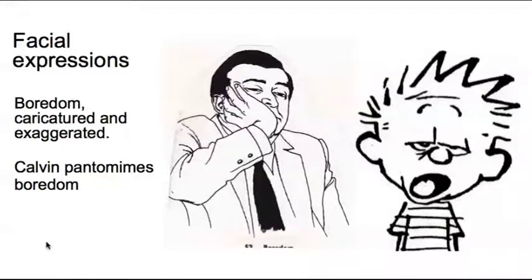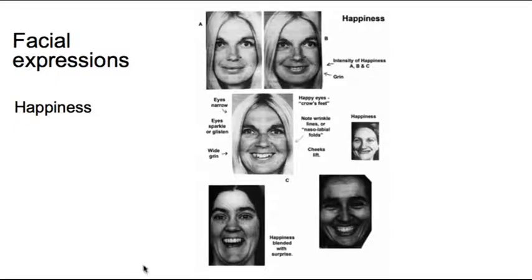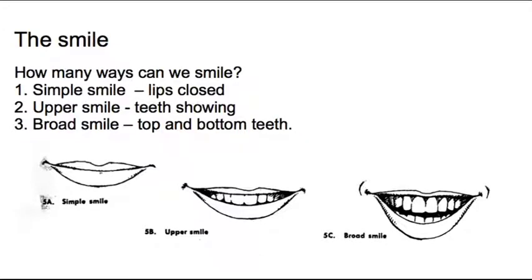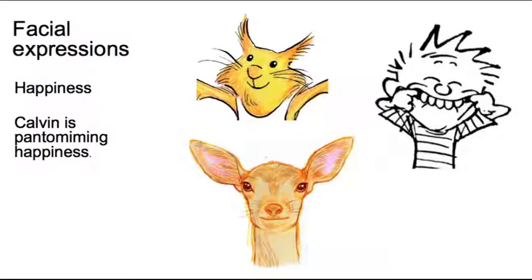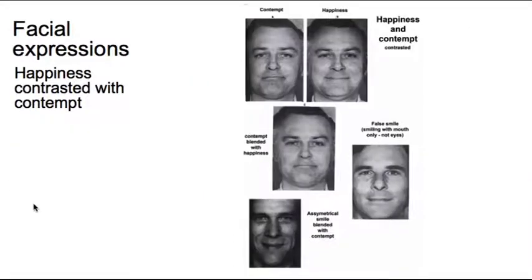Here's boredom — Calvin again pantomiming boredom. And here's happiness: obviously degrees of happiness, from a closed mouth to a slightly more open mouth to a really delighted super happy expression. When talking about a smile, you can have a simple smile with closed lips, a smile showing the teeth, and a broad smile showing various degrees of happiness. Here's a deer I did for the last Harry Potter film, and Calvin pantomiming happiness — like he's having to pull his lips into the happy shape.